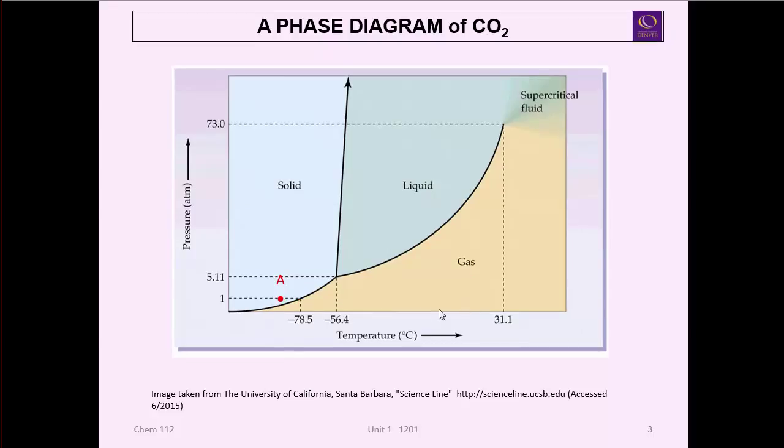On the other hand, if you started with the same dry ice at minus 80°C, one atmosphere, and now you just went straight up in pressure, you started increasing the pressure on it till you got up to like 20 atmospheres, it would now be in the solid state, but now you can start raising the temperature. We're going to maintain that same pressure.